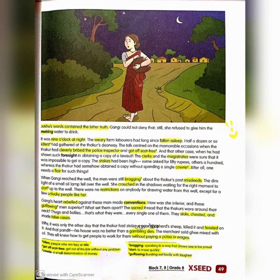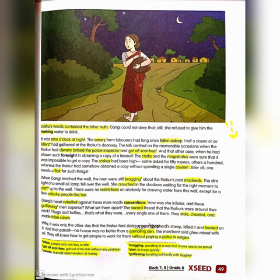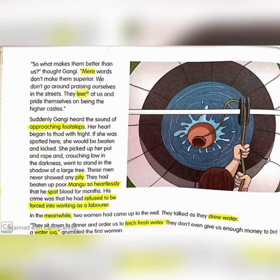Why, it was only the other day the Thakur had stolen a poor shepherd's sheep, killed it and feasted on it. And that pandit — his house was no better than a gambling den. The merchant sold ghee mixed with oil. They all knew how to get people to work for them without paying a paisa in wages. They did very bad deeds, yet were still considered respectable.